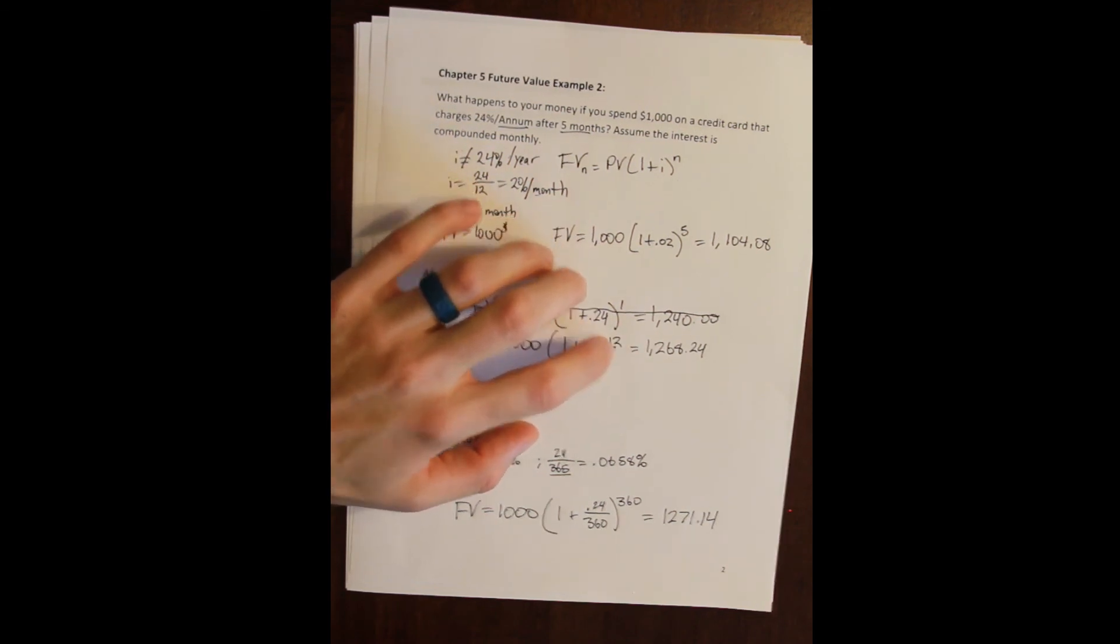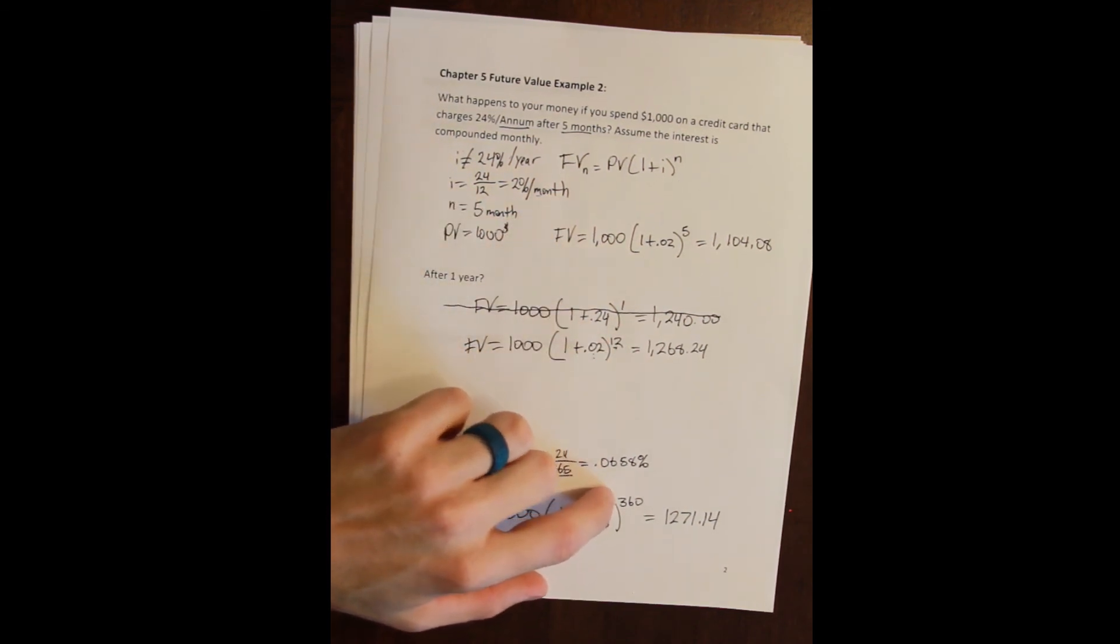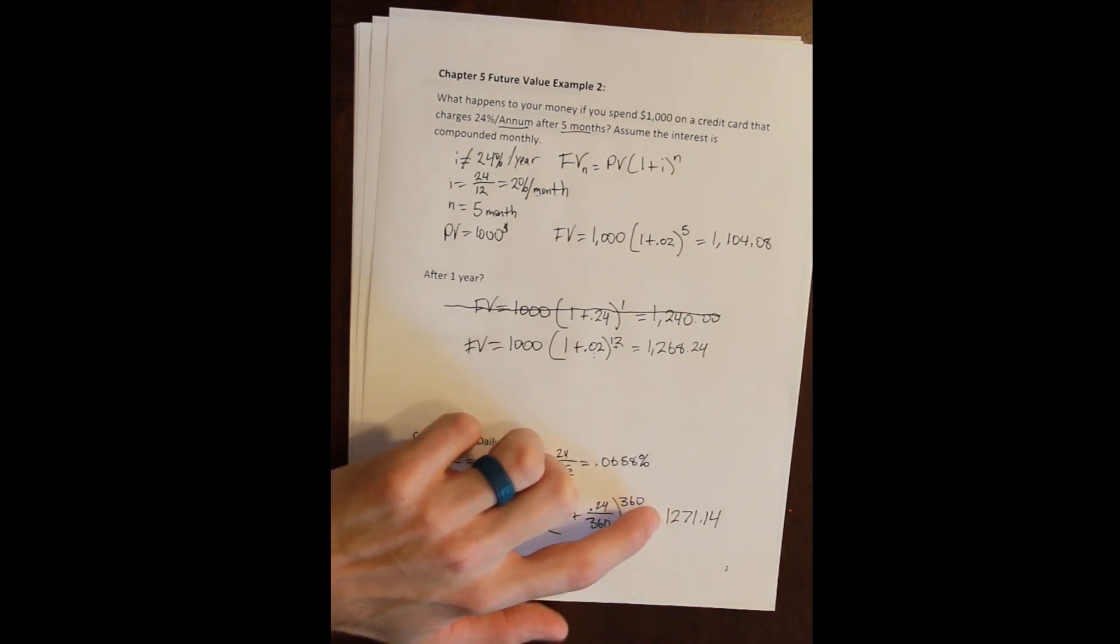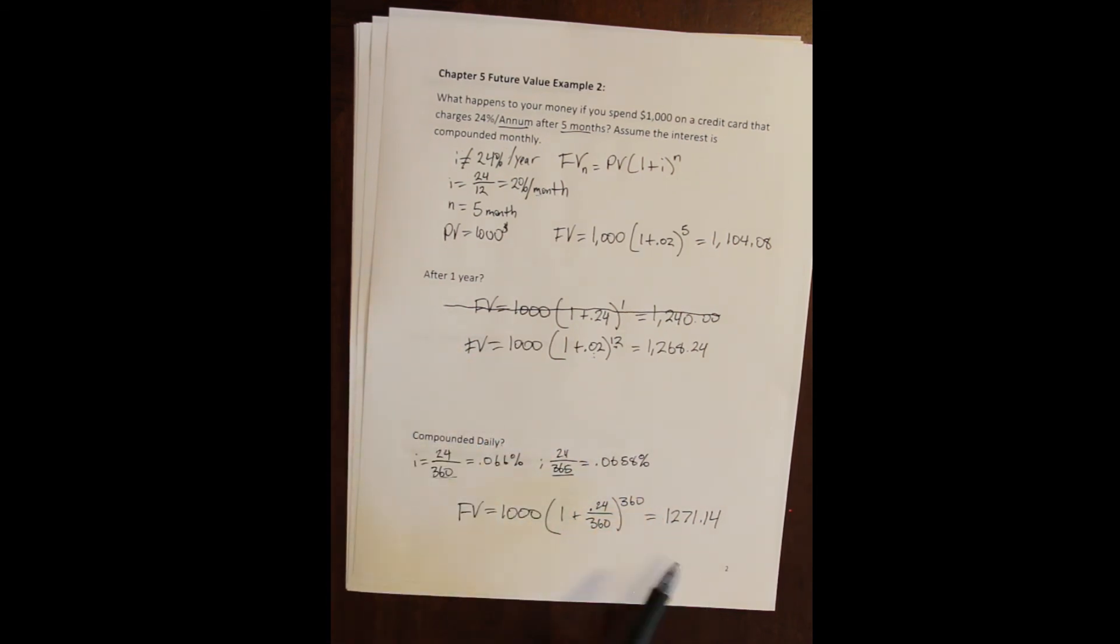But if we go from 12 compounding periods to 360 compounding periods, we only owe an additional three dollars. And if I went from 360 compounding periods to an infinite number of compounding periods, I'd only owe a few additional cents. I think it's like 1,271.17 or something like that. So the increase is even smaller.